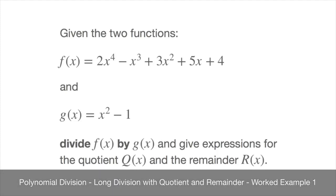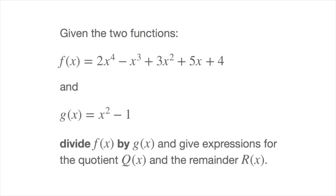In this tutorial, we're going to learn how to divide one polynomial function by another. We're given two functions: f of x, which equals 2x to the power of 4, minus x cubed, plus 3x squared, plus 5x, plus 4, and g of x, which is equal to x squared minus 1. We need to divide f of x by g of x and give expressions for the quotient function q of x and the remainder function r of x.